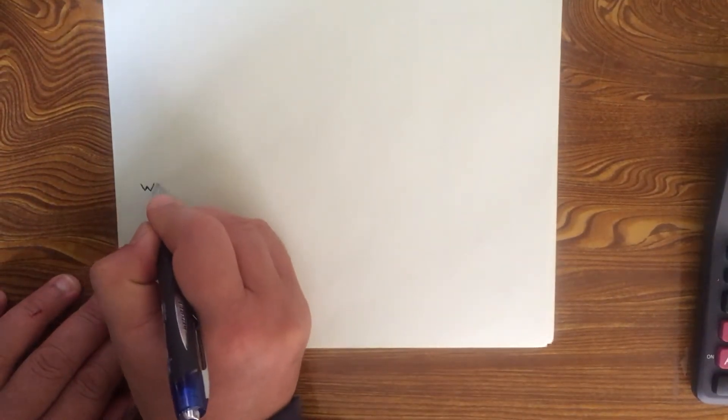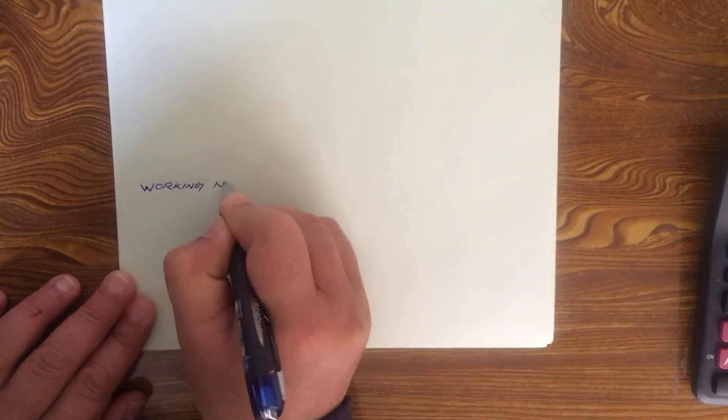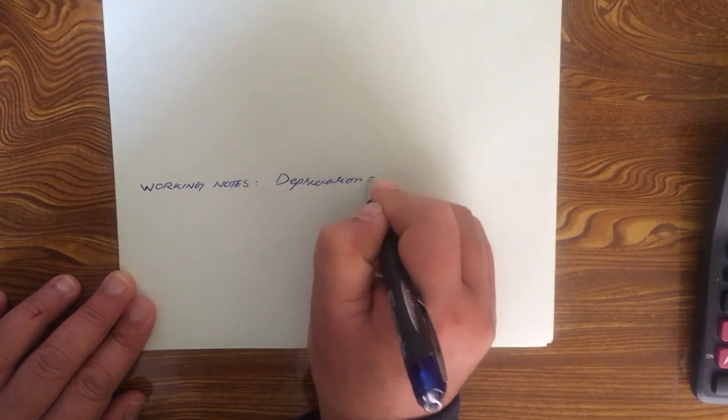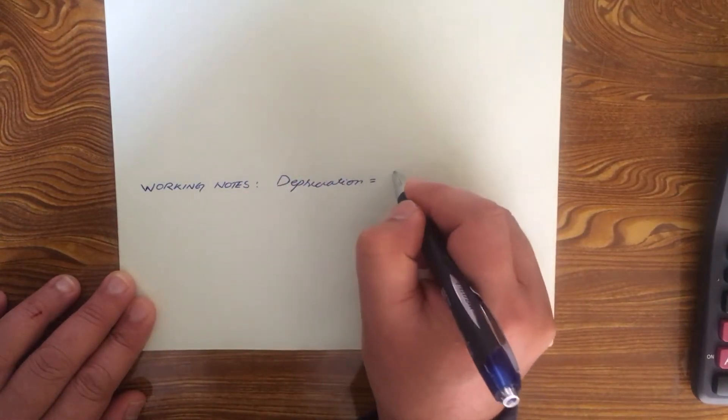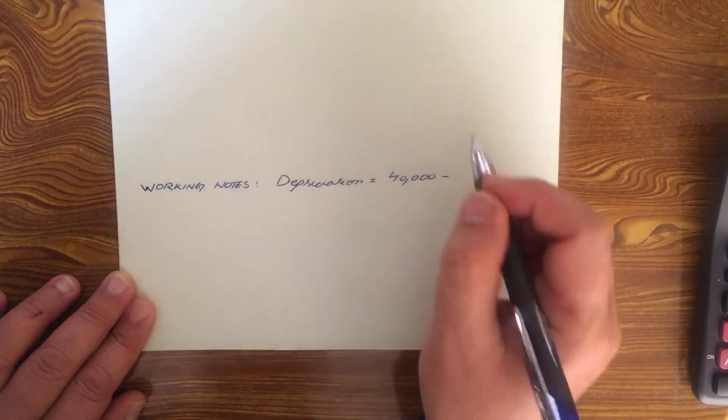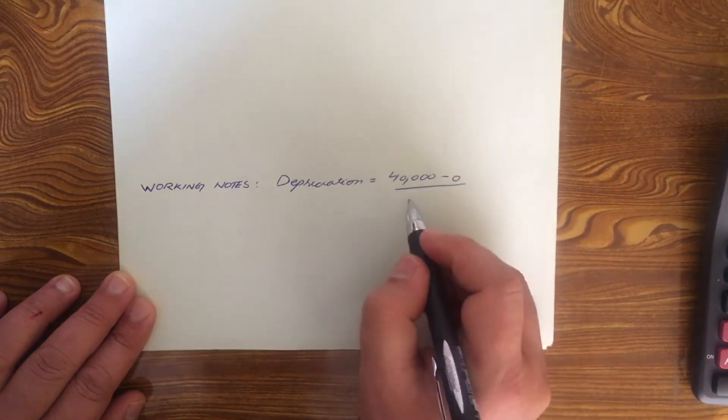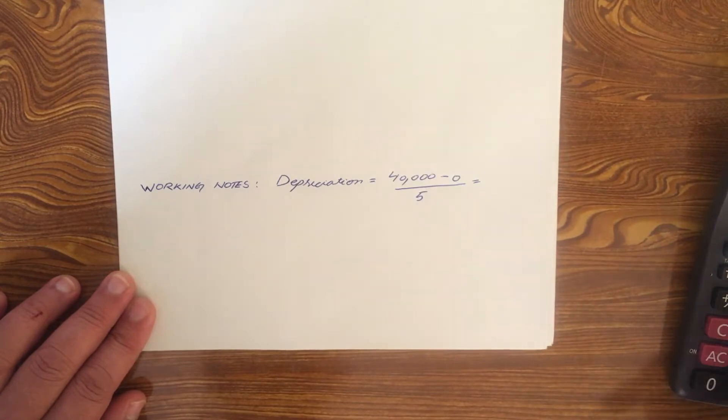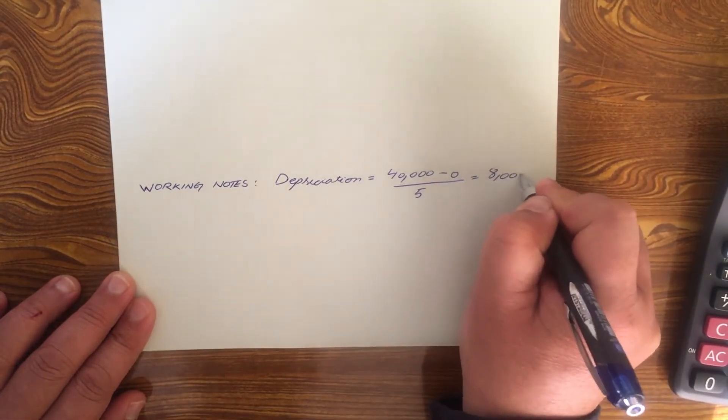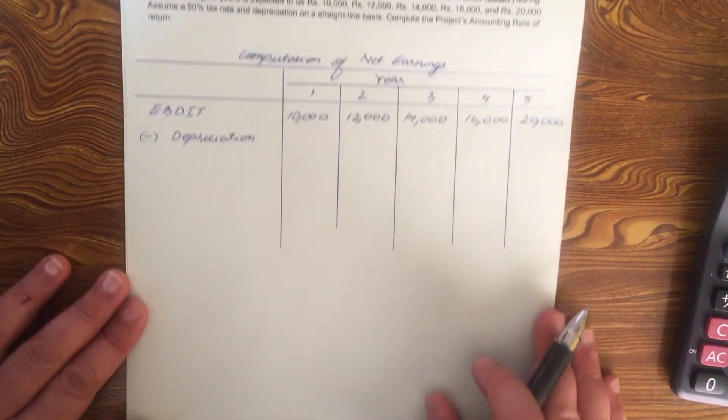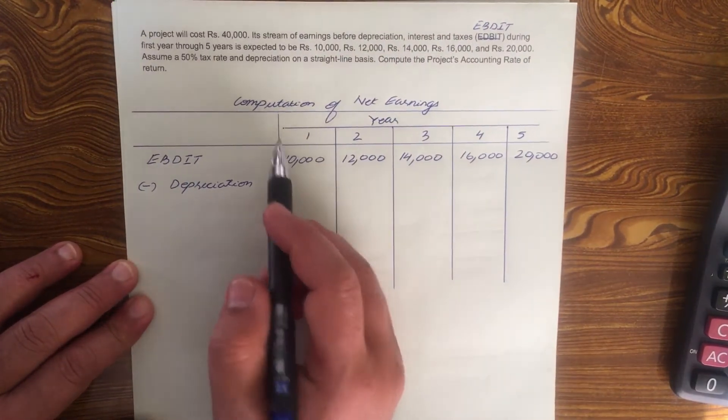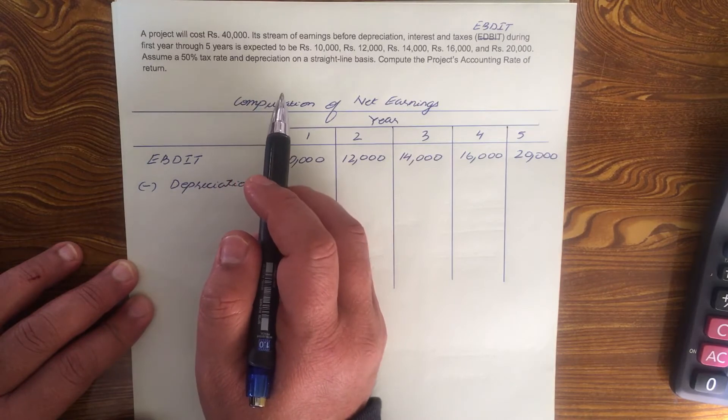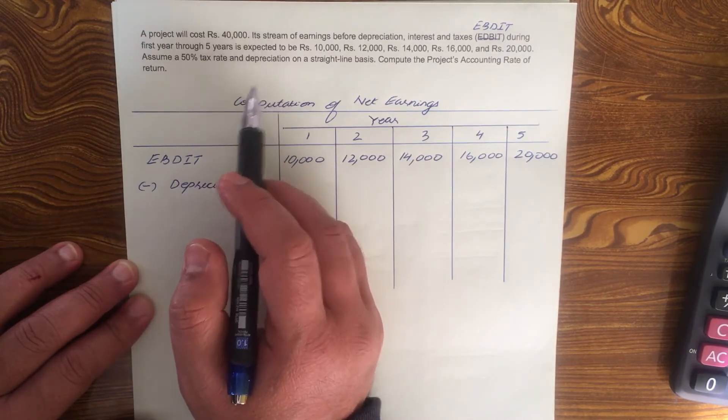Depreciation is equal to the cost of the project minus any scrap value. Is there any scrap value or salvage value in this problem? No. So 40,000 minus 0 divided by the life of the project. The life of the project is 5 years. So 40,000 divided by 5 years is 8,000. There you have it, depreciation is 8,000. If the method for depreciating is not mentioned whether it's straight line or written down value, then you always assume it to be on straight line basis.